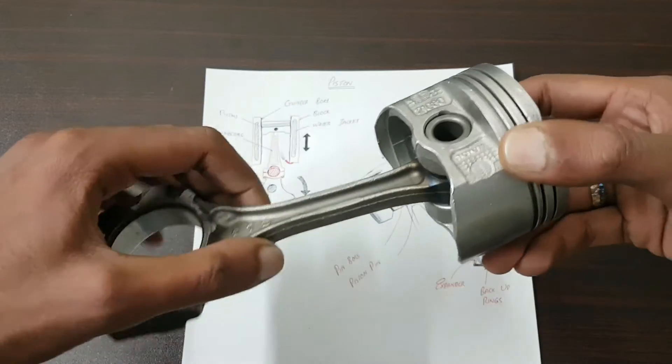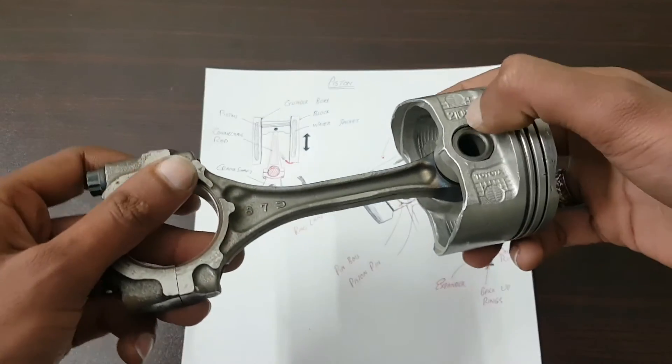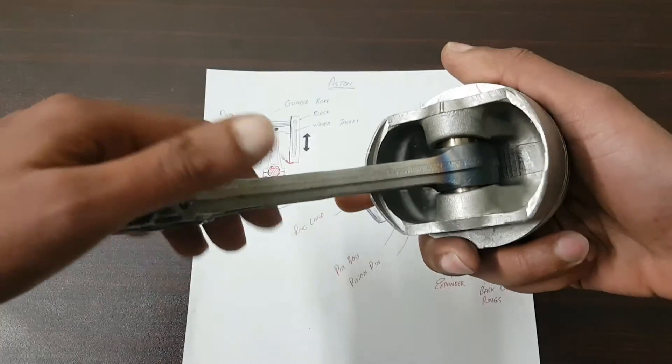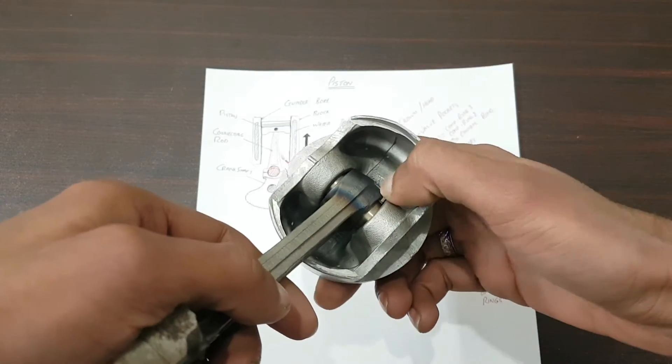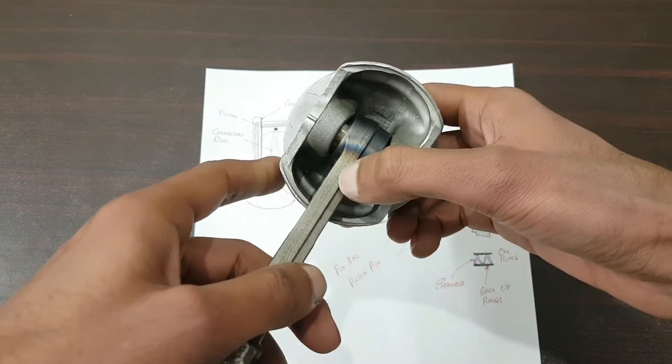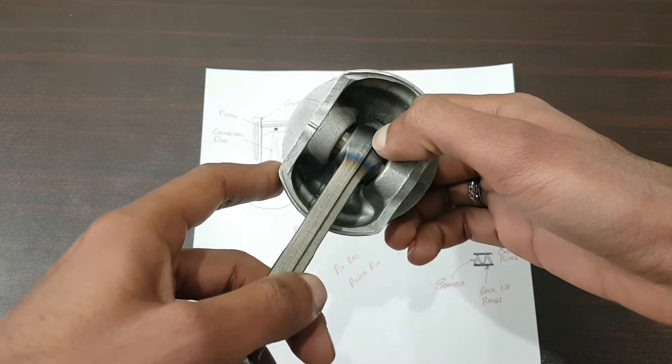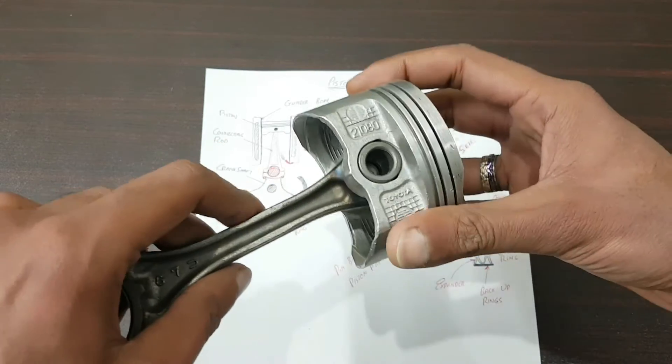You can see here this piston is linked to the connecting rod via piston pin. Before we begin, you should know the piston is round and from inside it is hollow. This rod is thermally fitted to the piston pin, and the pin is basically floating in the piston pin bosses.